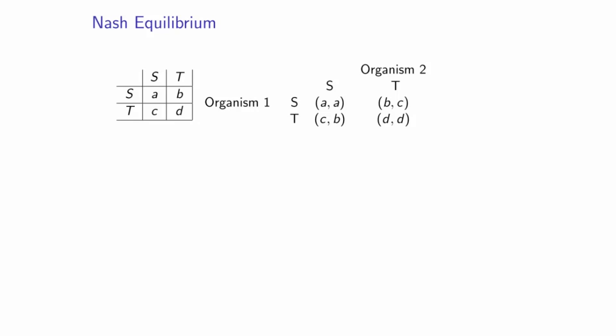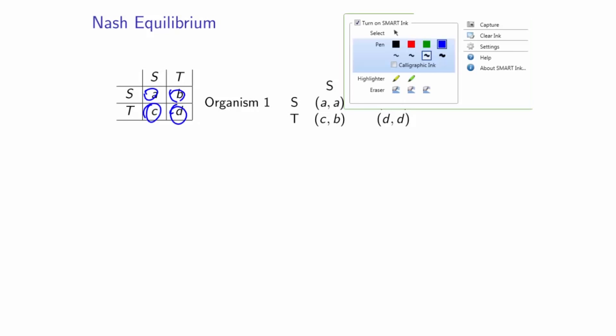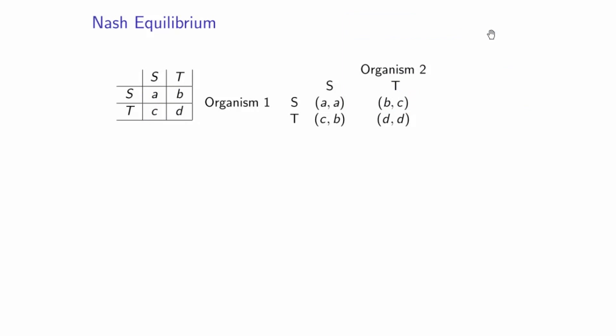We are getting used to the representation of payoffs in a theoretical game using a payoff matrix, which may be in one of these two forms. It's a very good exercise to be able to write one form from the other. Here we're representing two strategies denoted by the letter S and the letter T, and the payoffs are represented in a general form with values A, B, C, and D.